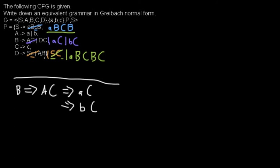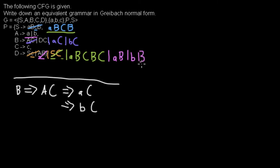Then we have the AB rule, which we can quickly handle as we did for B. I will replace A with its two possibilities — either a or b — remove the old rule, and get two new rules: D expands to aB, or D expands to bB. Now all the D rules are in Greibach normal form.